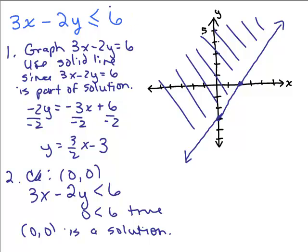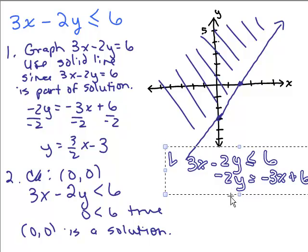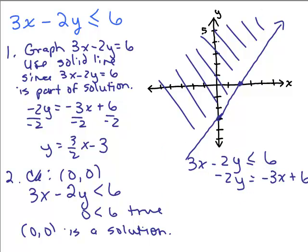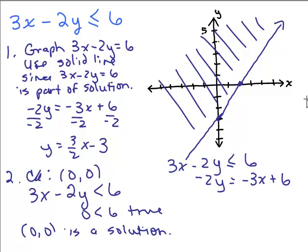Now, what if I had taken this original equation, 3x minus 2y is less than or equal to 6 and try to solve for y. Be careful here. First, just subtract 3x from both sides. And then when I divide by negative 2, be careful here. What happens when you divide by a negative? This is still less than or equal. When you divide by a negative, that switches to greater than or equal. So be careful.